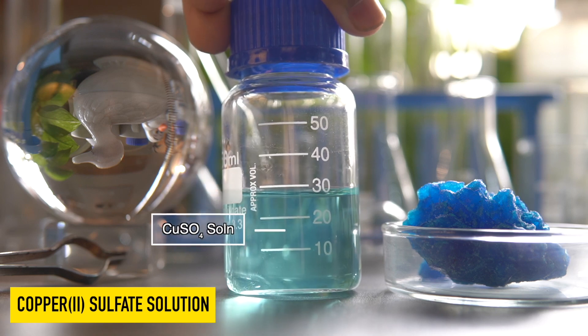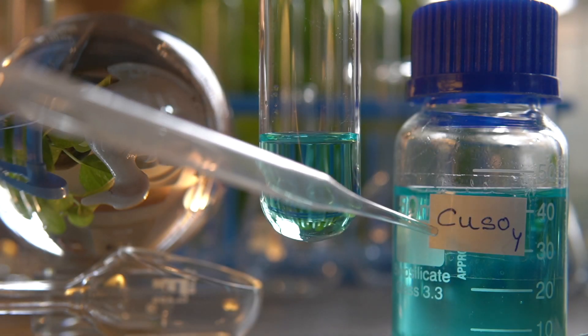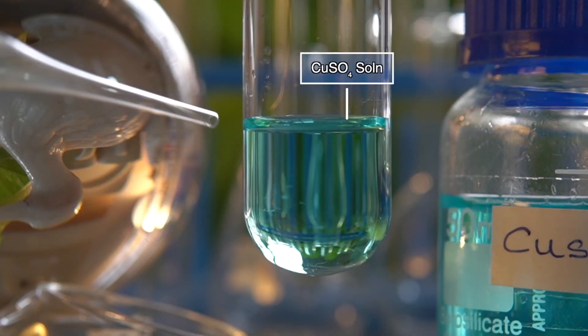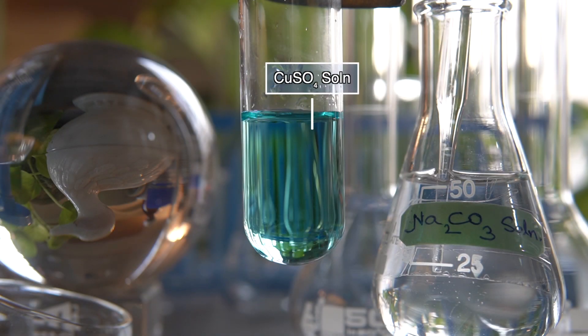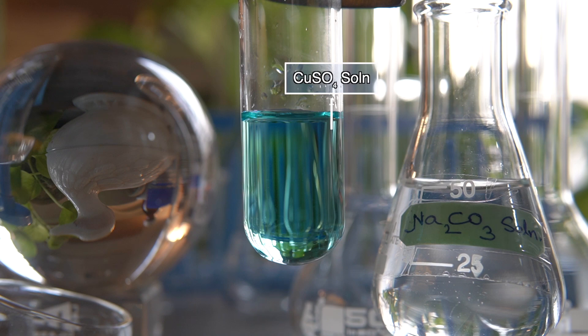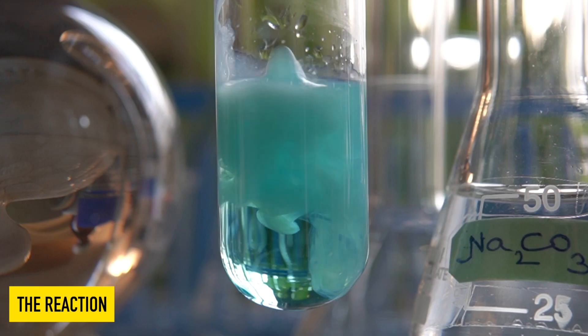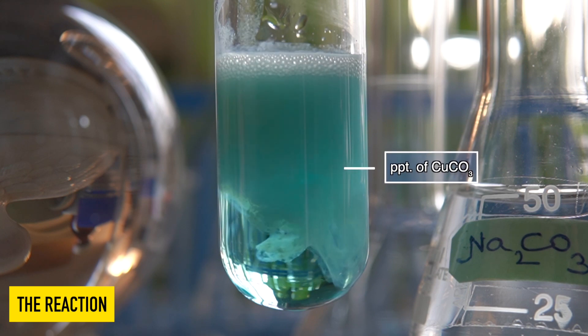Now to initiate the chemical reaction, we will take some clear solution of copper sulfate into this test tube. We will add the aqueous solution of sodium carbonate drop-wise onto copper sulfate solution slowly and observe the effects.